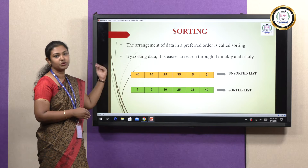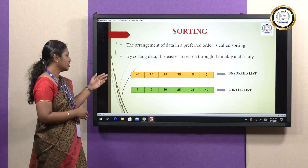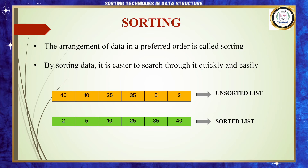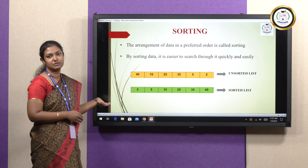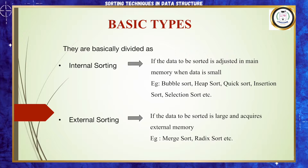We have to convert it into a sorted order. Here in the green column, we have 2, 5, 10, 25, 35 and 40. So this is part of a sorted list. Now let us see the basic types of sorting.